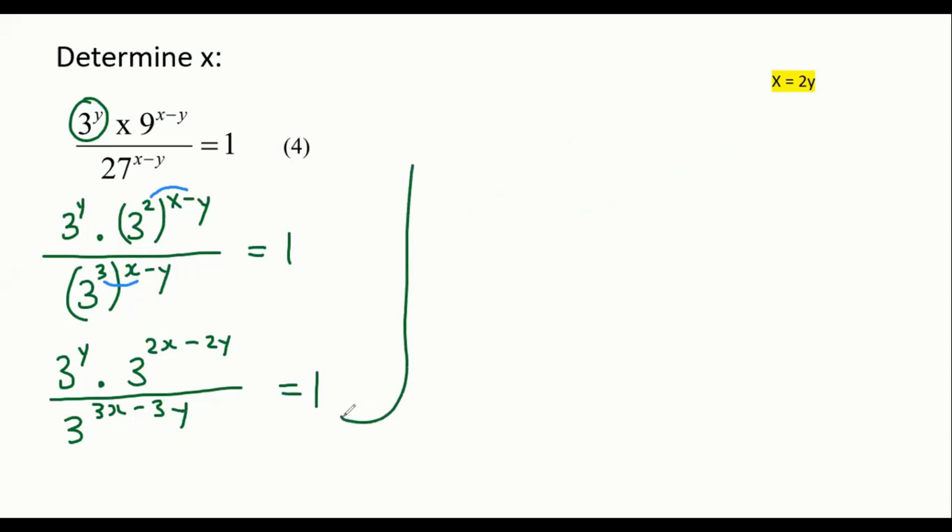So I'm going to carry on over here. That's going to become at the top, 3 to the power of y plus 2x minus 2y, over... and then this will just stay like that. I'm just going to simplify a little bit further. So that'll become 3 to the power of 2x minus y over 3 to the power of 3x minus 3y equals 1.